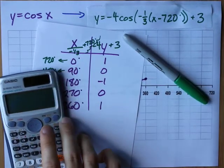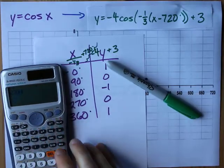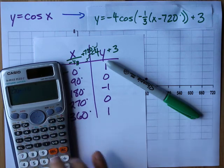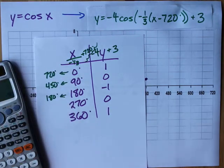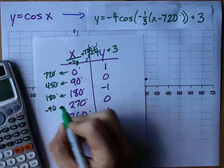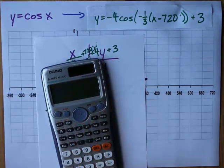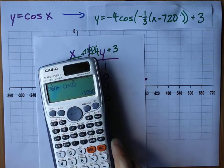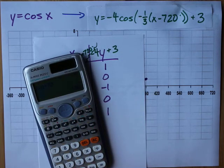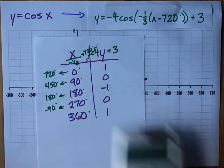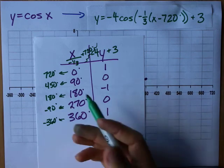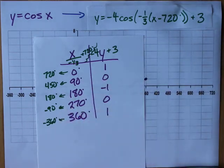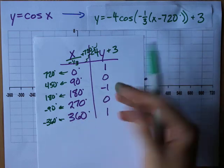270 divided by negative a third gives me negative 810. Add 720, I get negative 90 degrees. And 360 divided by negative a third is negative 1080. Then I add 720 to that, which gives me negative 360. Just took some work. The fact that this number was preserved with the sign flipped is a coincidence — it won't always work out that way. And the fact that 180 became 180 is also a coincidence.